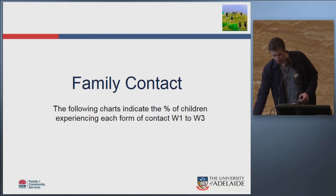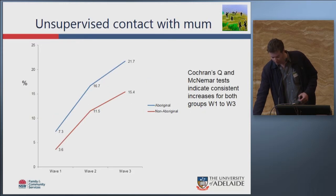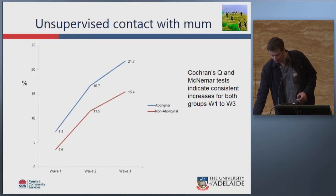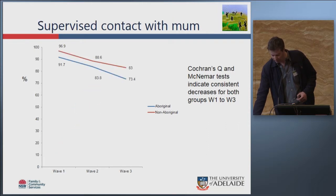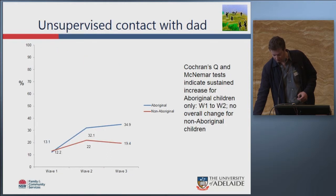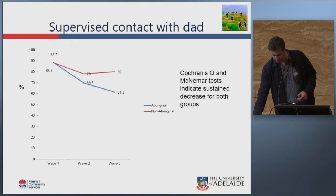Regarding family contact overall, there was a trend towards greater contact, though with mixed patterns: supervised contact with mum was going down, telephone contact was going up, unsupervised contact with dad was going up, and another contact measure was going down.